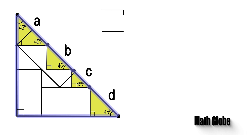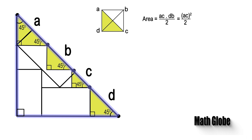Then recall one of the formulas for the area of a square. As seen, the area of the right triangle will be equal to the area of half a square. From this, we prove that the area of the right triangle will be equal to the square of the hypotenuse divided by 4.